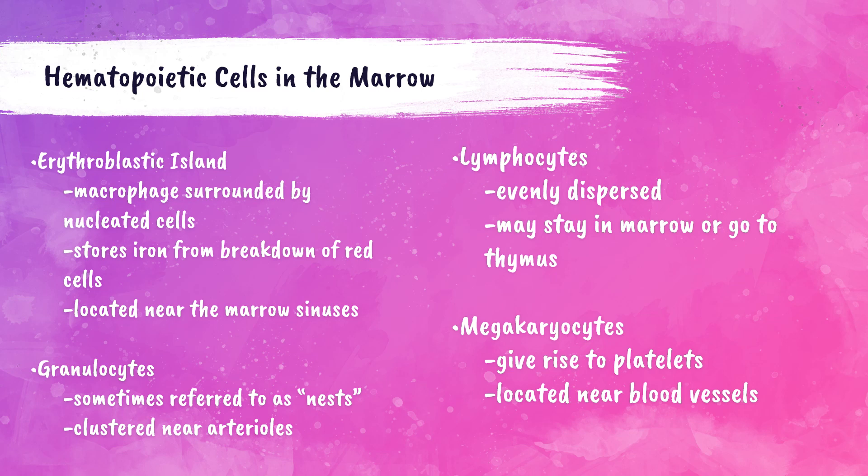Lymphocytes are another type of white blood cell derived from lymphoblasts. They can either mature in the bone marrow and be released — these are called B lymphocytes — or precursor cells can travel from the bone marrow into the thymus gland, where they mature until released. These are called T lymphocytes.